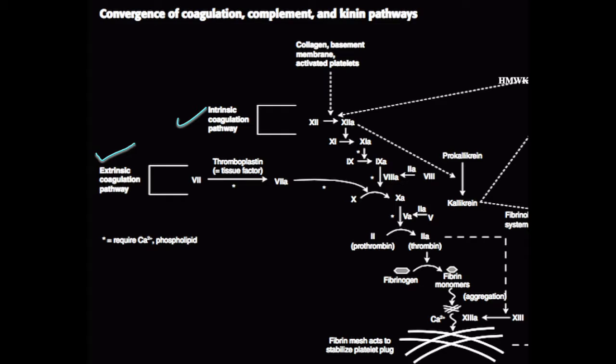So this is an overview of the coagulation, complement, and kinin pathways. The image may look really complicated at first glance, but let's go through this in pieces and then bring everything together at the end.